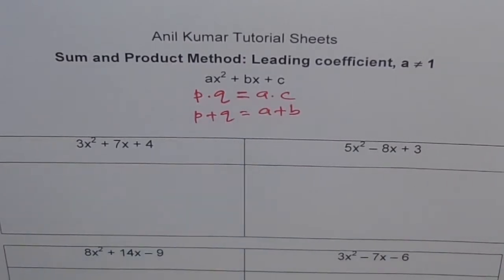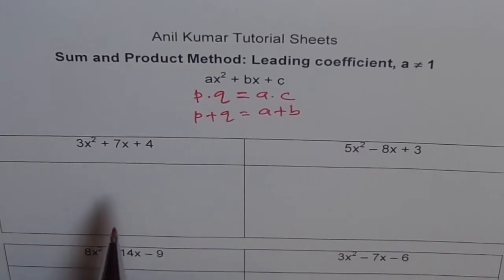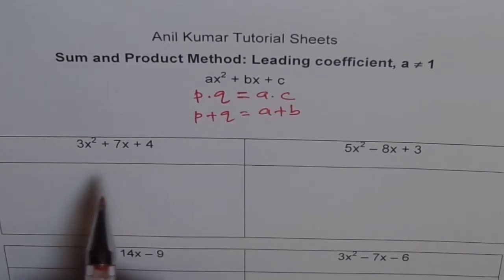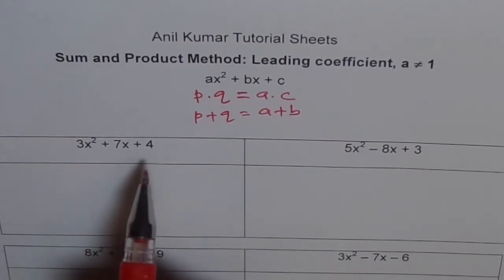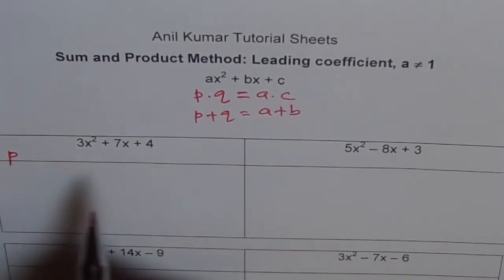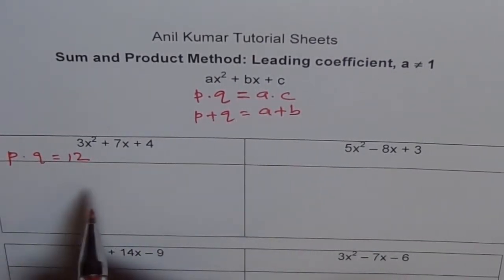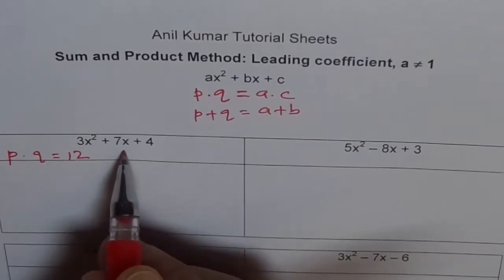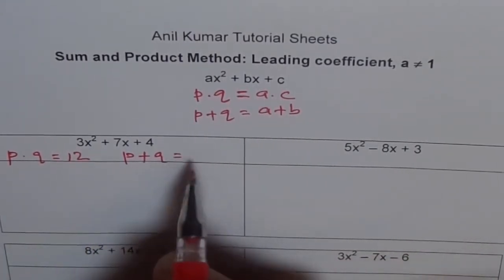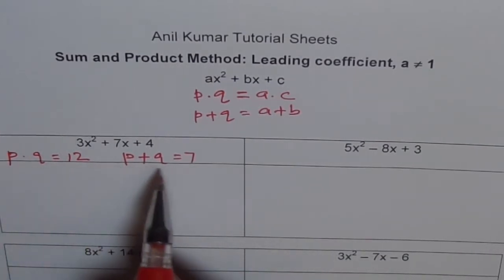I'll show you the procedure with these examples. Here we have 3x squared plus 7x plus 4. What are we looking for? We are looking for two numbers whose product is 4 times 3, that is 12. So p times q equals 12, and their sum should be 7 — that is, p plus q equals 7.